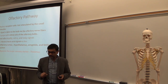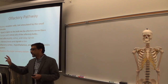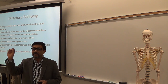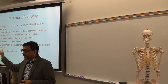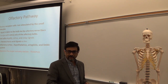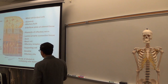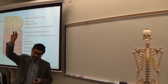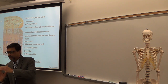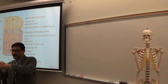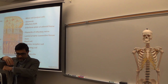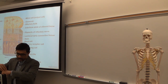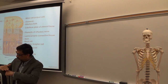One important point: the thalamus is the major sensory relay station, and almost all sensory signals are relayed there. However, the olfactory signal is not relayed in the thalamus — it bypasses the thalamus. This is because the olfactory cortex, amygdala, and limbic system are very close to the olfactory bulb, so the signal doesn't need to go to the thalamus and come back.